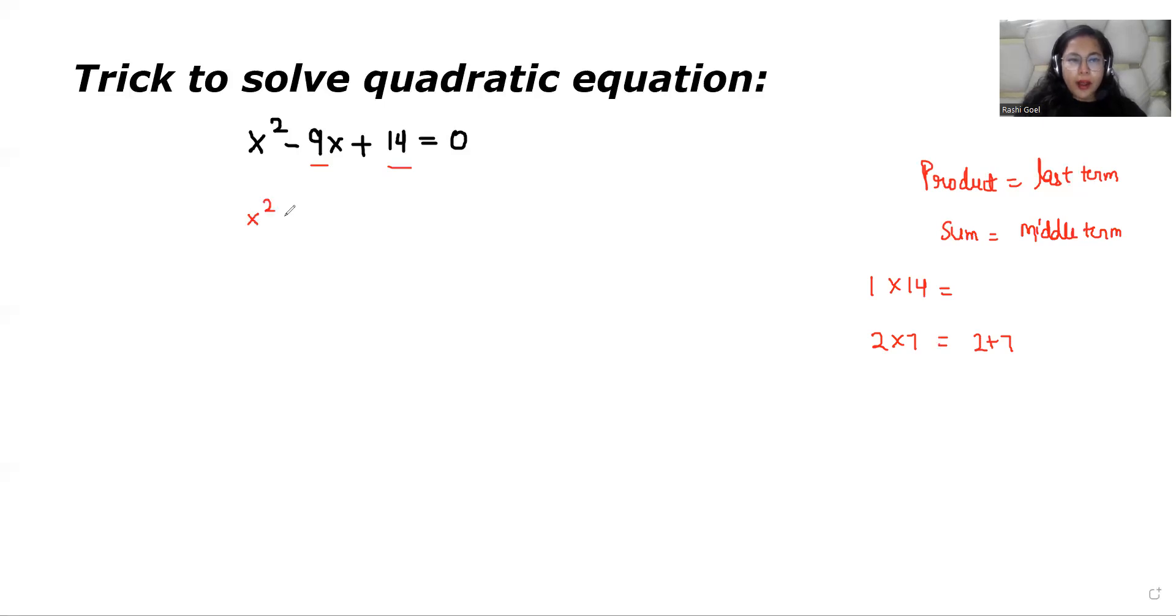So we will take x squared minus 7x minus 2x because we need minus 9x. So we have to take both the sign negative plus 14 is equals to 0. Now from the first two terms we can take x common.